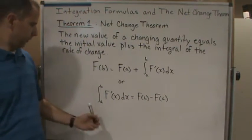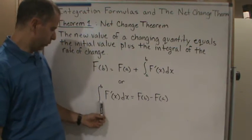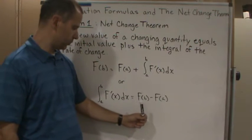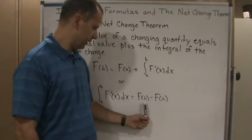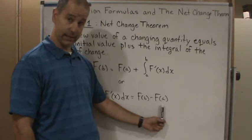Or, if you solve for the integral, you get: the integral from a to b of f'(x) equals the final value minus the initial value, F(b) - F(a).